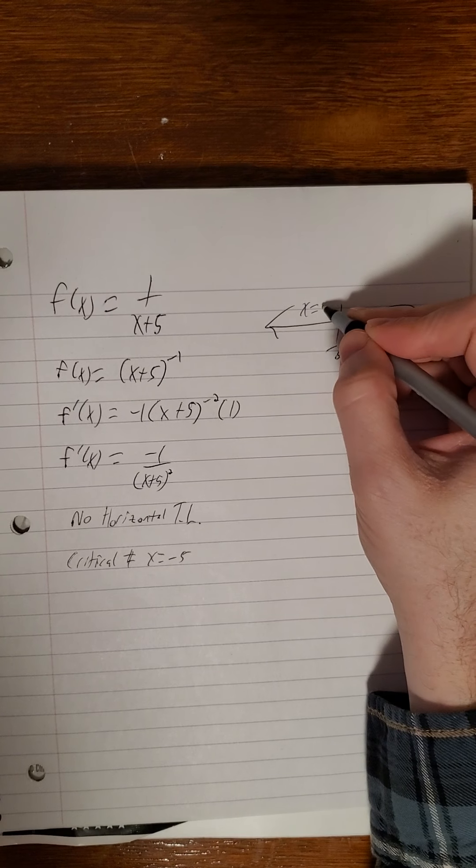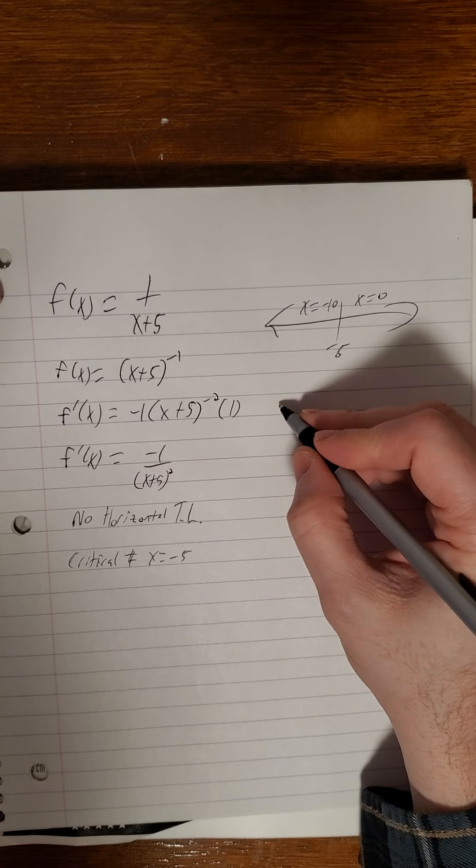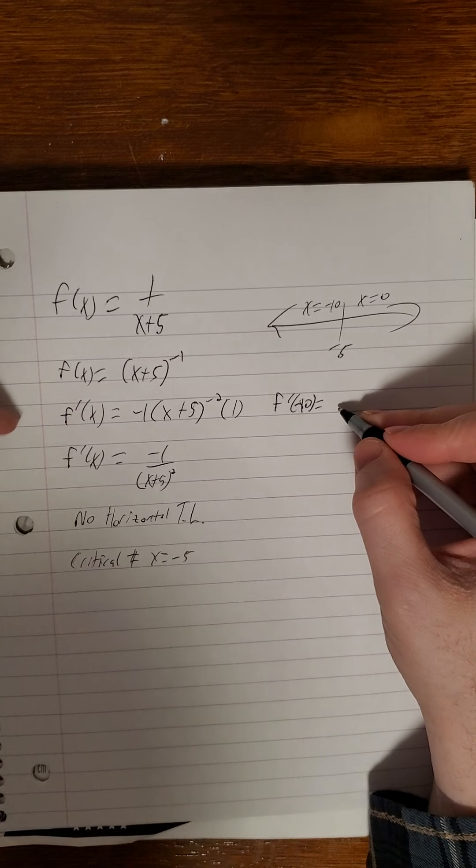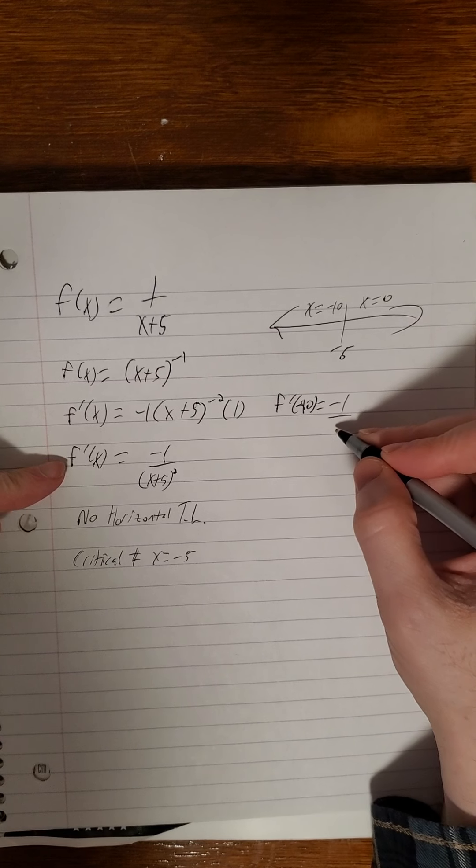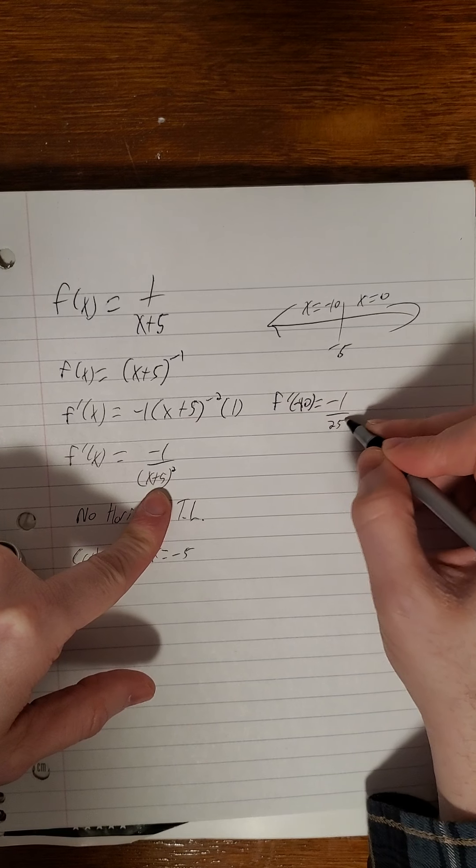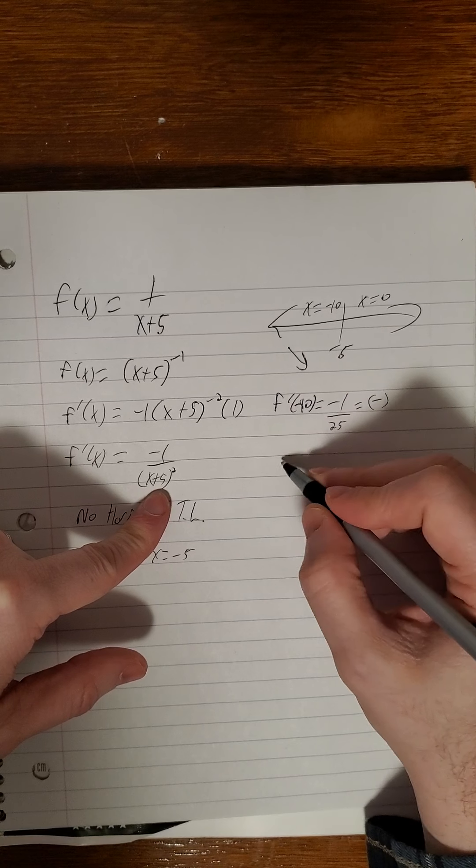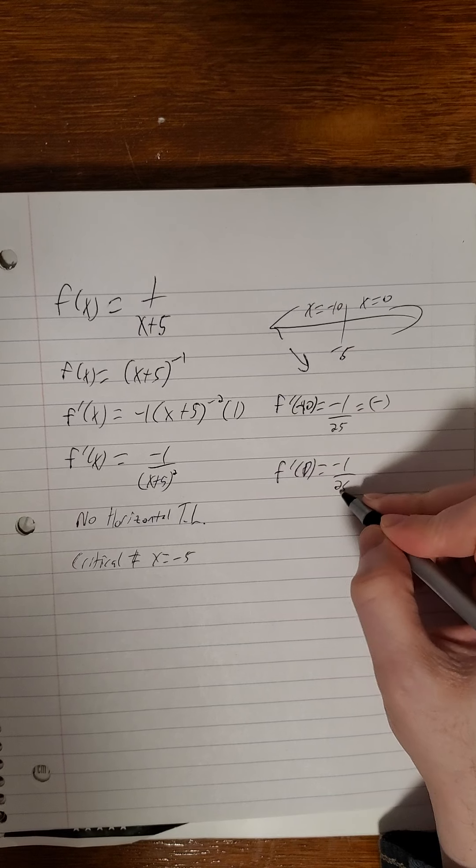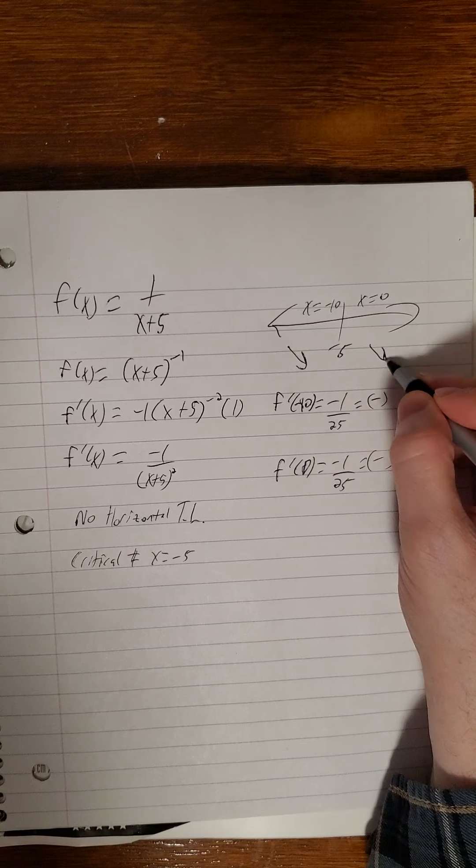And then we just pick test point on either side. So f prime of negative 10. We'll go with this version of it. So negative 1 over negative 10 plus 5 is negative 5. Negative 5 quantity squared, that's 25. So this is a negative. So we're decreasing here. F prime of 0. Negative 1 over 25 again. That's a negative. So we're decreasing over here as well.